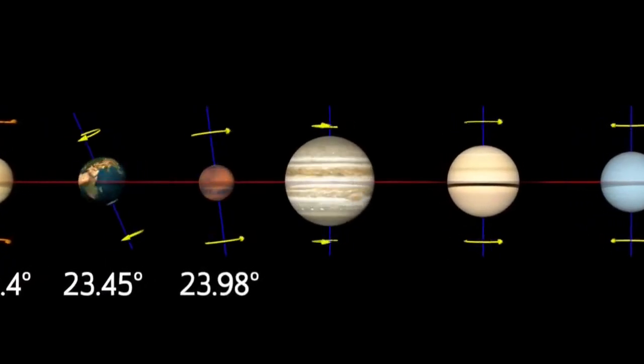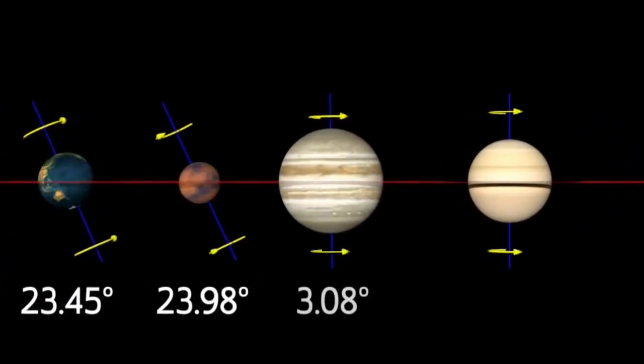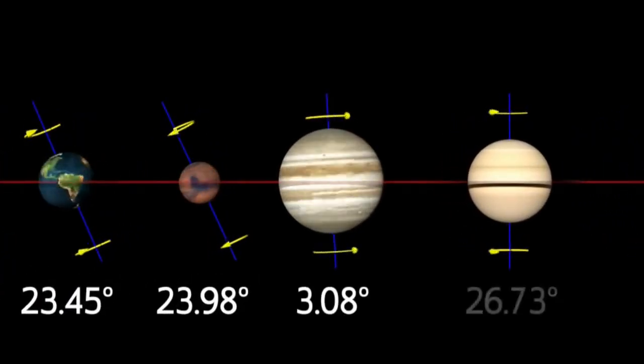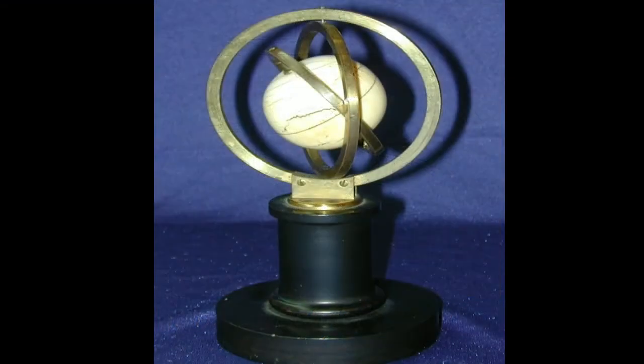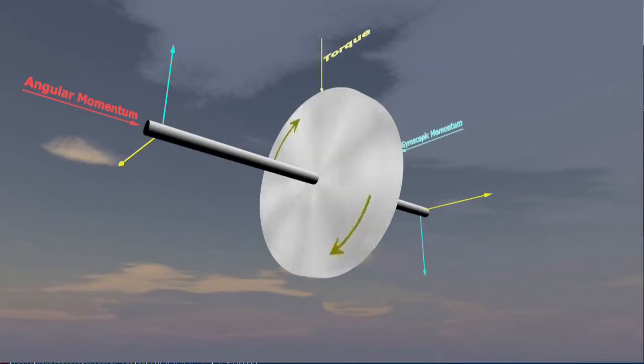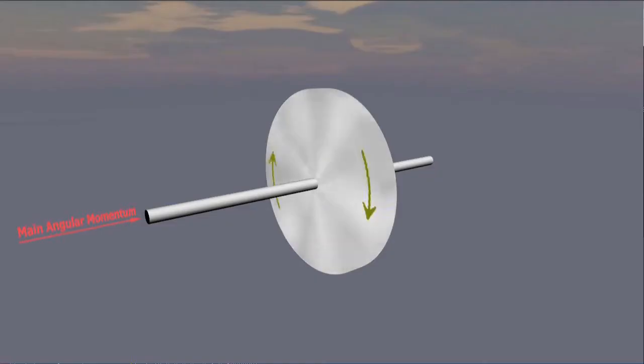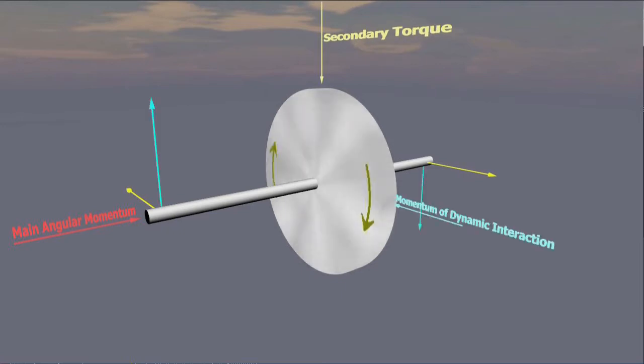Bodies endowed with angular momentum and subject to multiple rotational excitations are considered. In Classical Mechanics, it has been defined as gyroscopic moment, what is called here moment of dynamic interaction, in order to incorporate this notion into the conceptual structure of a new coherent rotational dynamics.